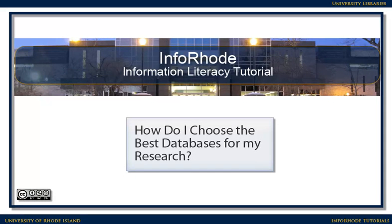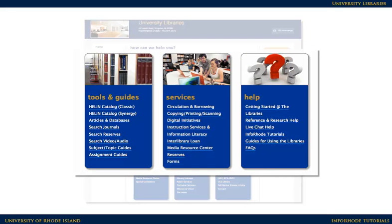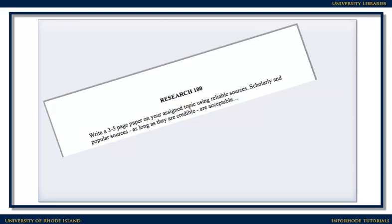How do I choose the best databases for my research? URI Libraries subscribe to a wide variety of databases on different subjects. Using a database for your research will quickly connect you to articles on your topic. To pick the right database, think about the research you're doing. Are you looking for information to help you with a project or paper for a 100 or 200 level class? A general database, such as Academic Search Complete, is a good place to start and may provide enough information.